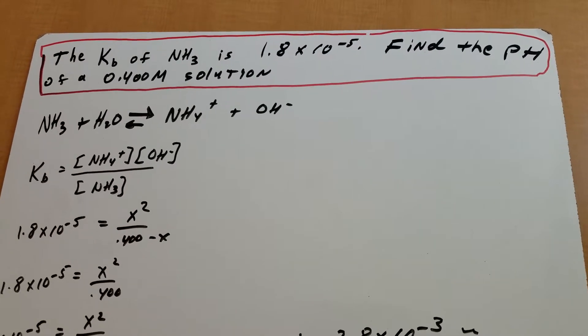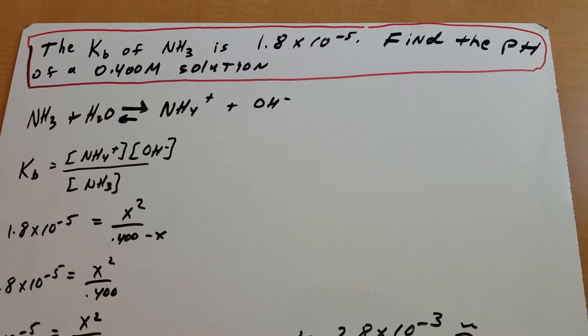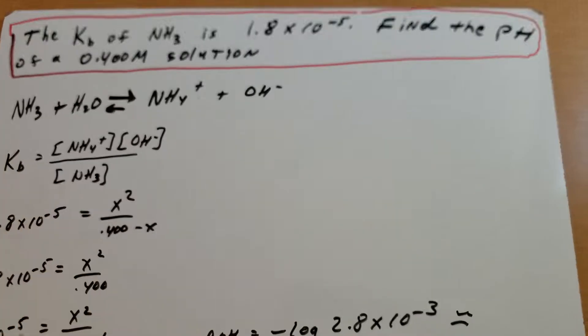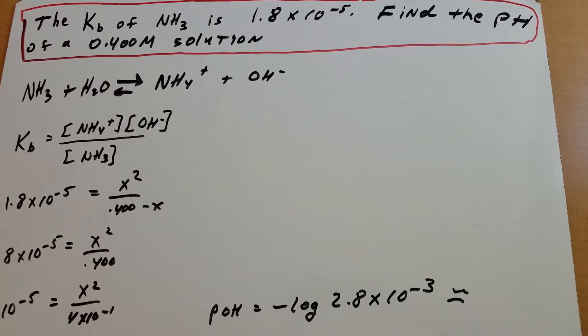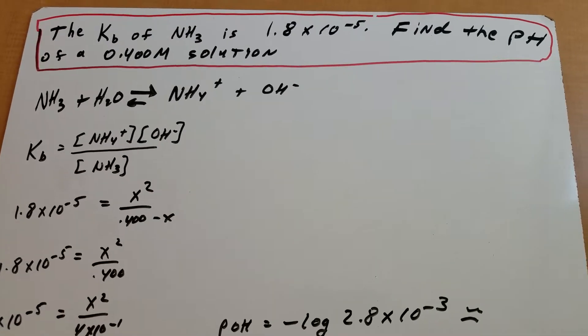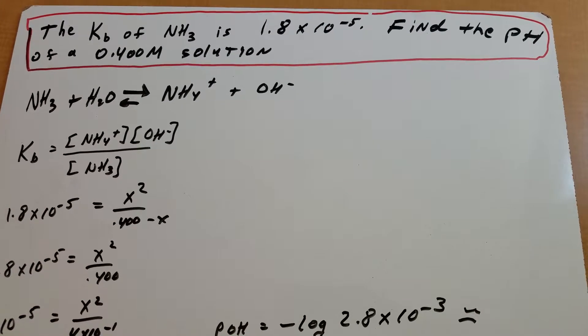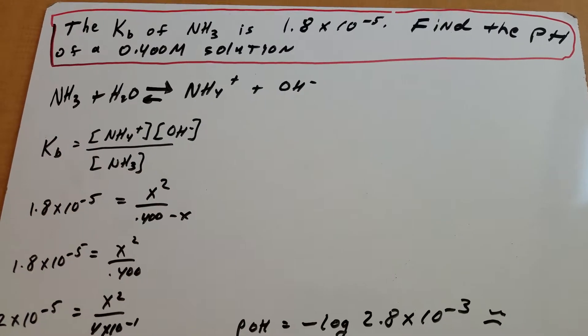The first thing you're going to do when approaching any of these questions on pH is to write the equation. Because they give you a Kb, it's a base. And as you know, a base is going to accept a proton. We're all going to make a deal. In general chemistry, we always assume the solvent is water unless otherwise noted. So I'm going to take the ammonia and put it in water.